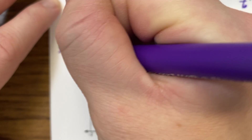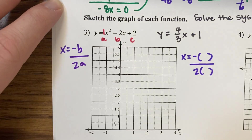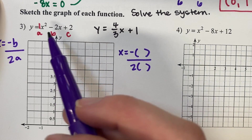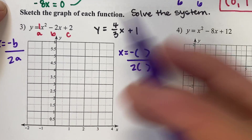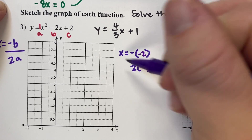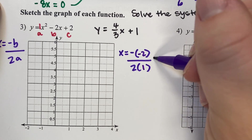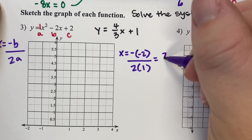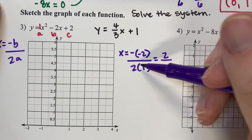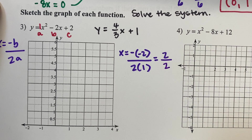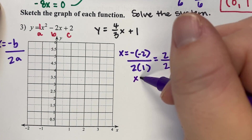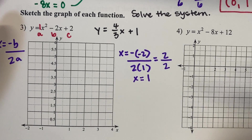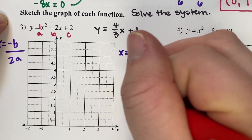So x equals negative b over 2 times a. We plug in: b is negative 2, a is 1. A negative negative 2 turns into positive 2, divided by 2 times 1, which is 2. So x equals 1. That is the x part of our vertex.